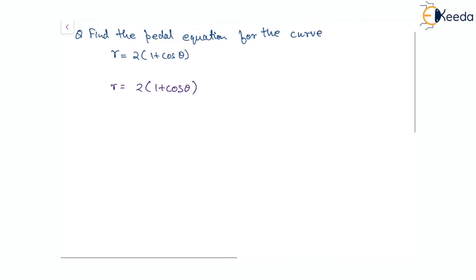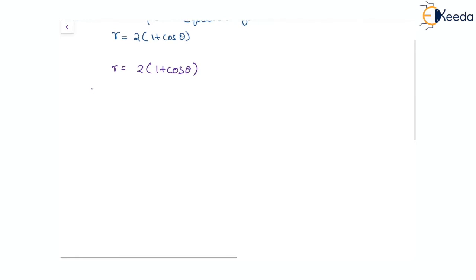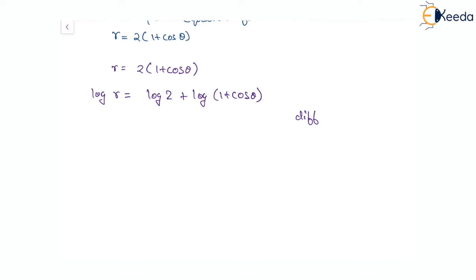Let us take log on both sides, so we'll have log of r equal to log two plus log of one plus cos theta. Now differentiating with respect to theta, we'll have one by r times dr by d theta. Log two is a constant so that gives zero, and the derivative of log of one plus cos theta gives one over one plus cos theta times the derivative of one plus cos theta.